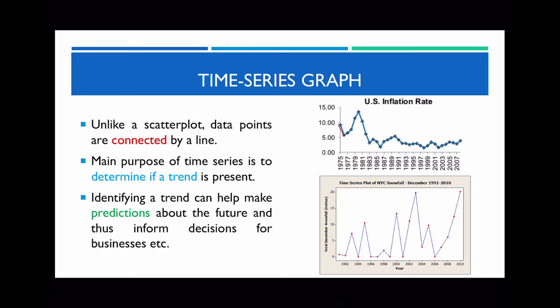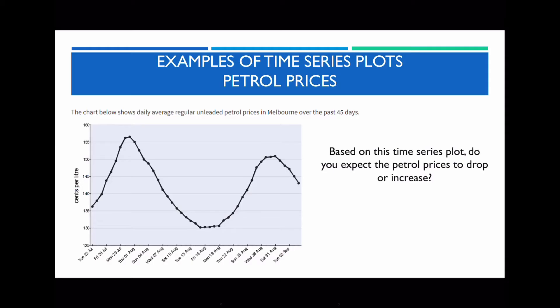The main purpose of why we look at time series graphs is to determine whether a trend is actually present. It is very useful to determine whether these trends are present, as this will inform business decisions — such as allowing businesses to see whether they should continue selling a product or whether they need to make changes in their marketing strategies. What I have on this slide is a time series graph that shows the price of Melbourne's petrol prices over the last 45 days.